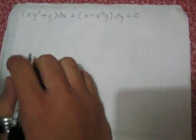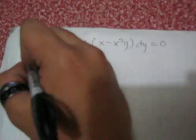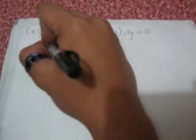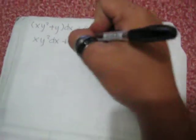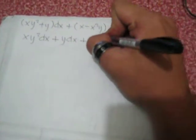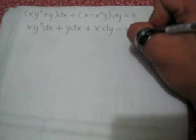First, we will rewrite this equation into xy²dx + ydx + xdy - x²ydy = 0.